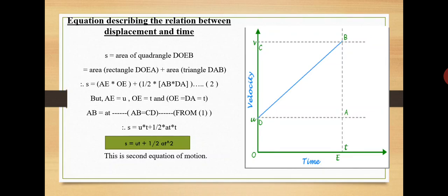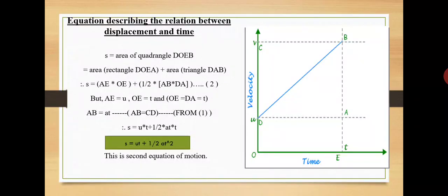AB can also be written as at, since AB = CD from equation one. Substituting the values into equation two, we get s = u × t + ½ × at × t. Therefore, Newton's second equation of motion is s = ut + ½at².